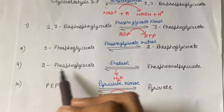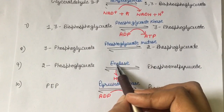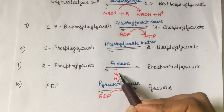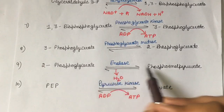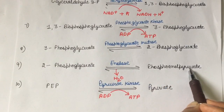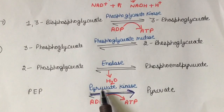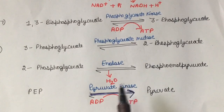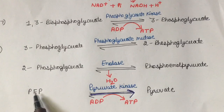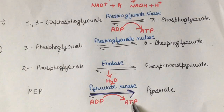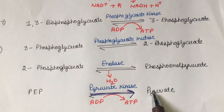Next, 2-phosphoglycerate is acted upon by the enzyme enolase, and in this step we see the release of water, and it gets converted into phosphoenolpyruvate. In the last step, pyruvate kinase enzyme transfers the phosphate group from phosphoenolpyruvate to ADP, which forms ATP, and phosphoenolpyruvate is converted into pyruvate.